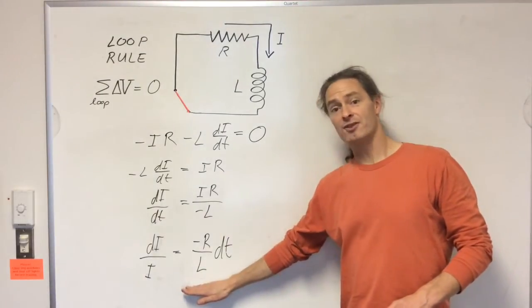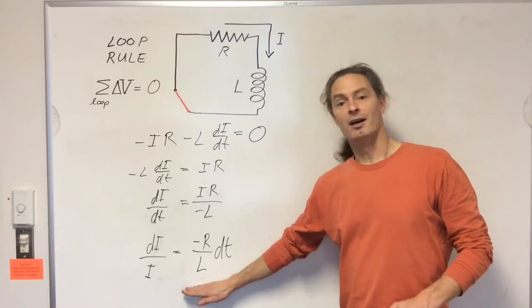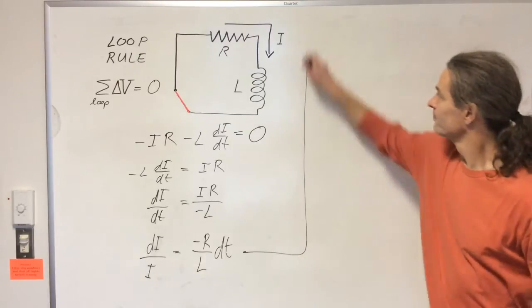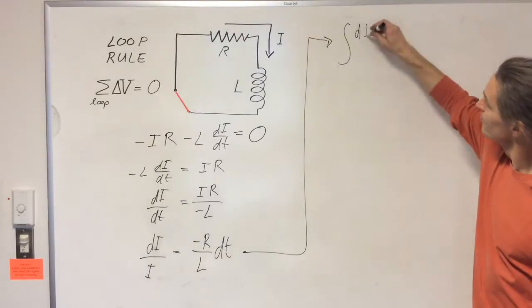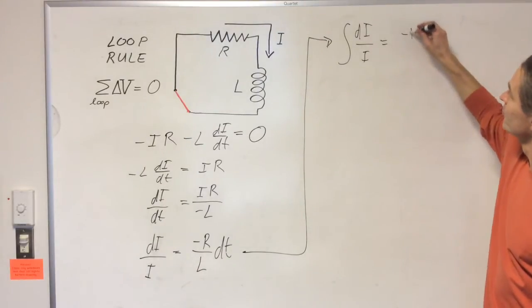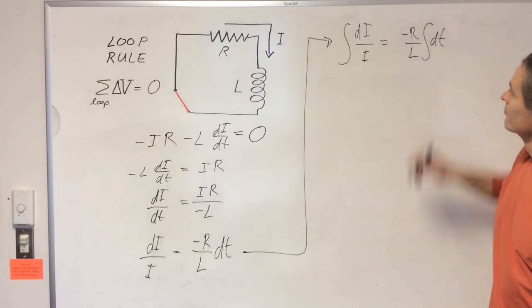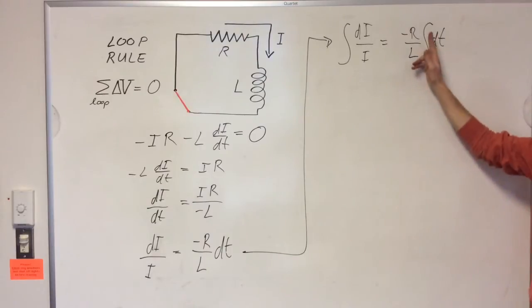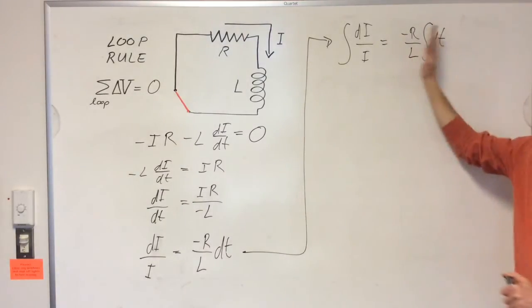All right, so now we have something that we can integrate. So let's do that over here. Here I've pulled out the minus r over l because that's a constant and so it can come out of the integral.